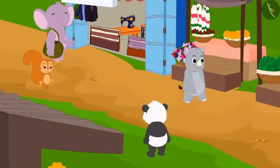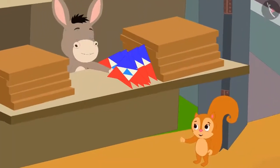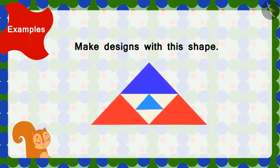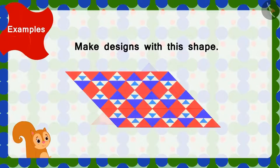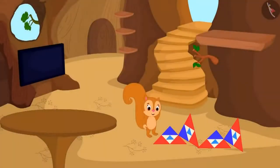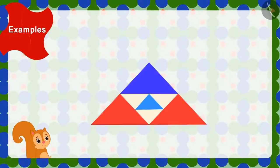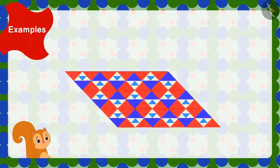Next day, Chanda bought these types of tiles from the market. The shopkeeper had told Chanda that she could use tiles with such shape and make this type of design. But Chanda is unable to make this design. Children, can you help Chanda make the design by making use of the tiles with this shape?